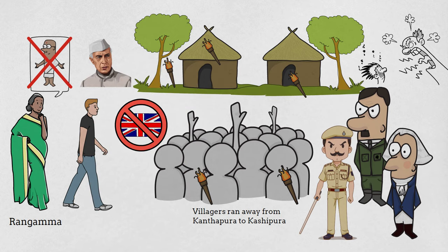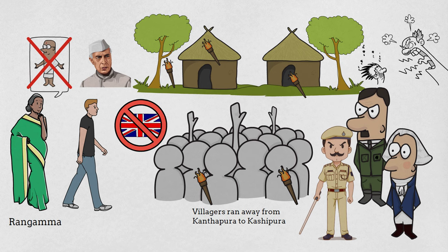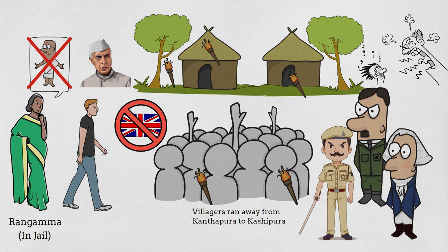Whereas Mahatma Gandhi is an idealist, Jawaharlal Nehru is a realist. Moorthy starts becoming more practical and joins Nehru's movement at the end of the novel. Rangamma is still in jail, and with this the story comes to an end.